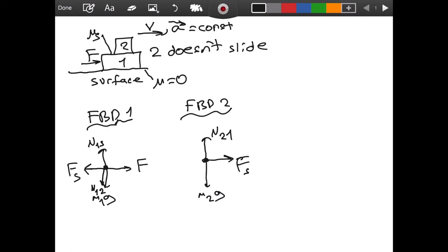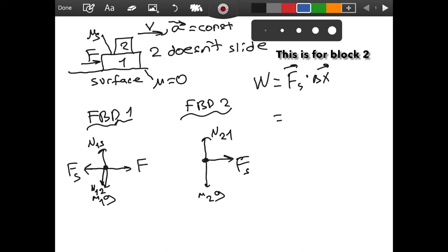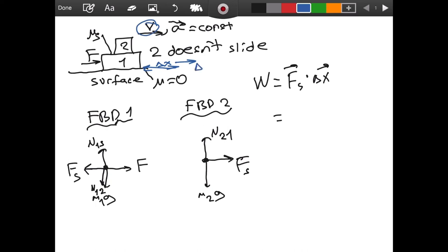And let's look at the work. Let's look at the work done by the force of static friction. Well, if you use the dot product of force of static friction and the distance traveled, let's say that these blocks travel for a distance of delta x while we observe them. And obviously delta x is to the right because the velocity is to the right.